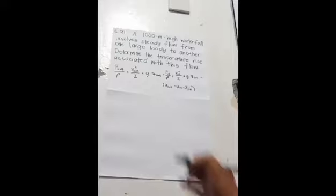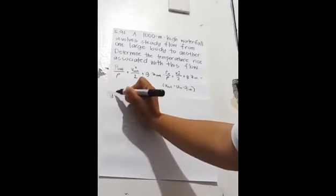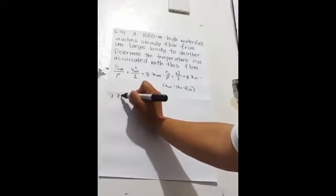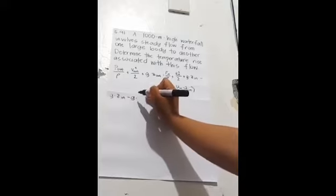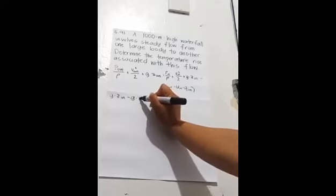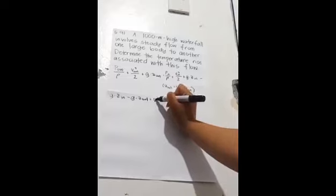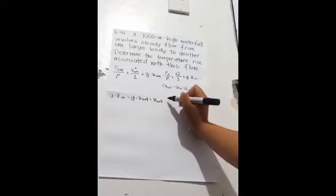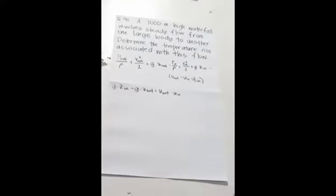So the derived equation becomes G times Z in minus G times Z out is equal to U out minus U in.